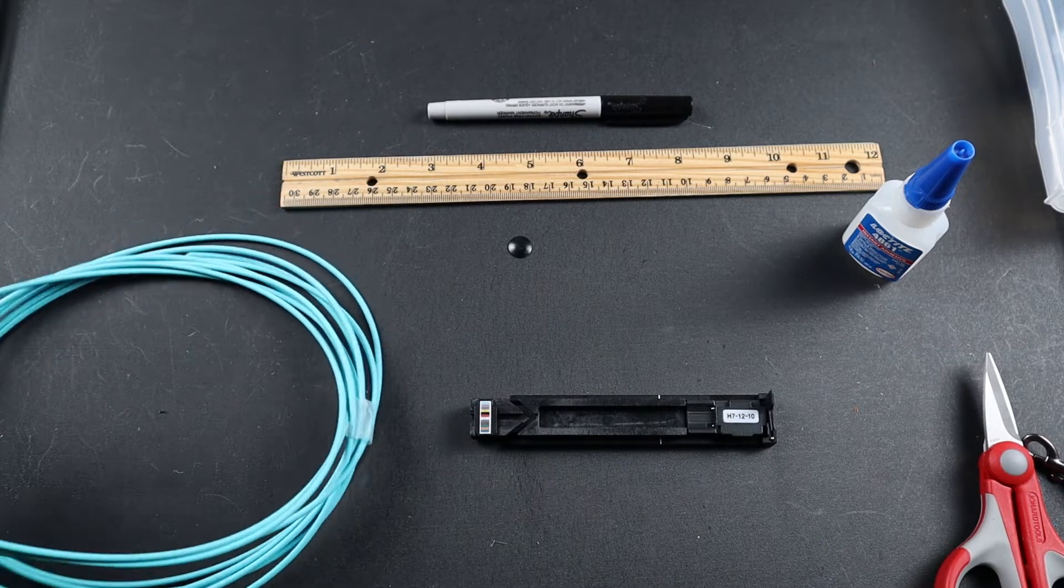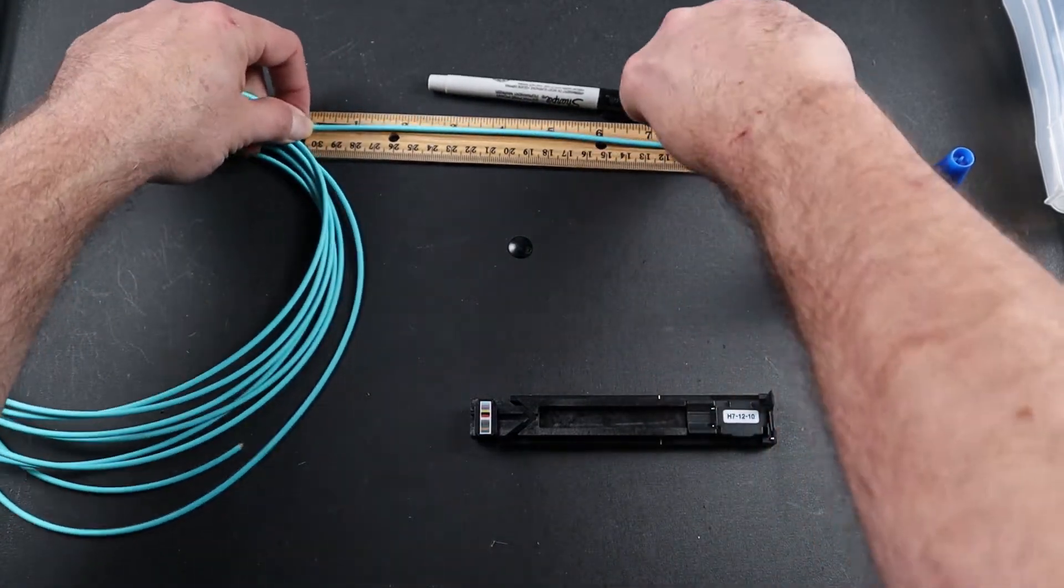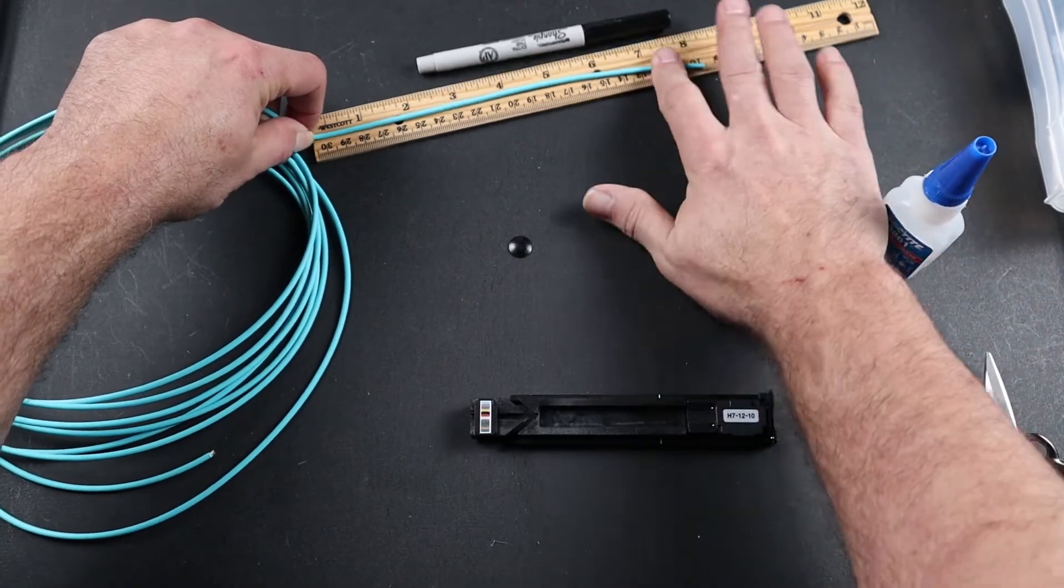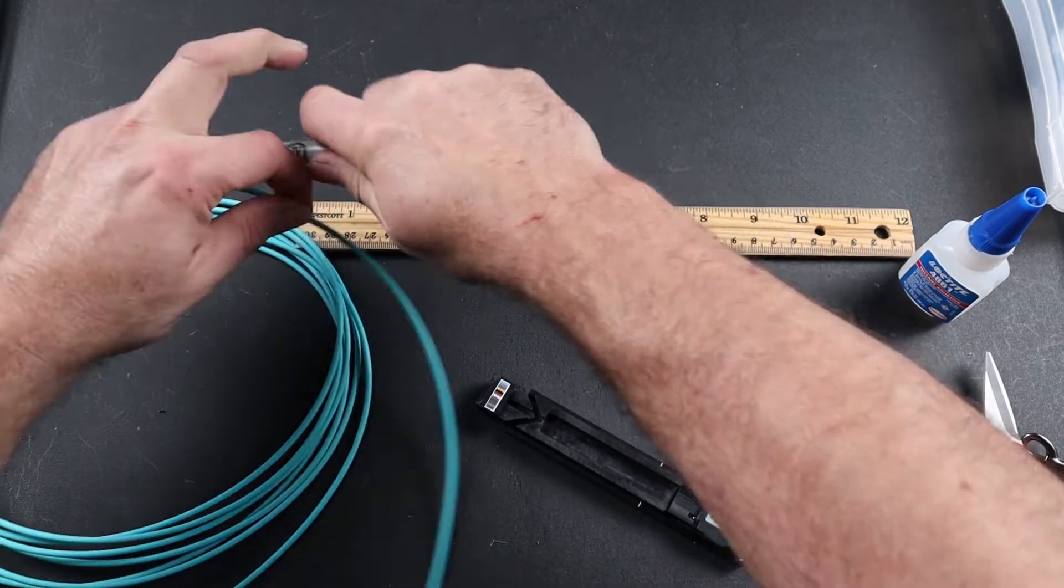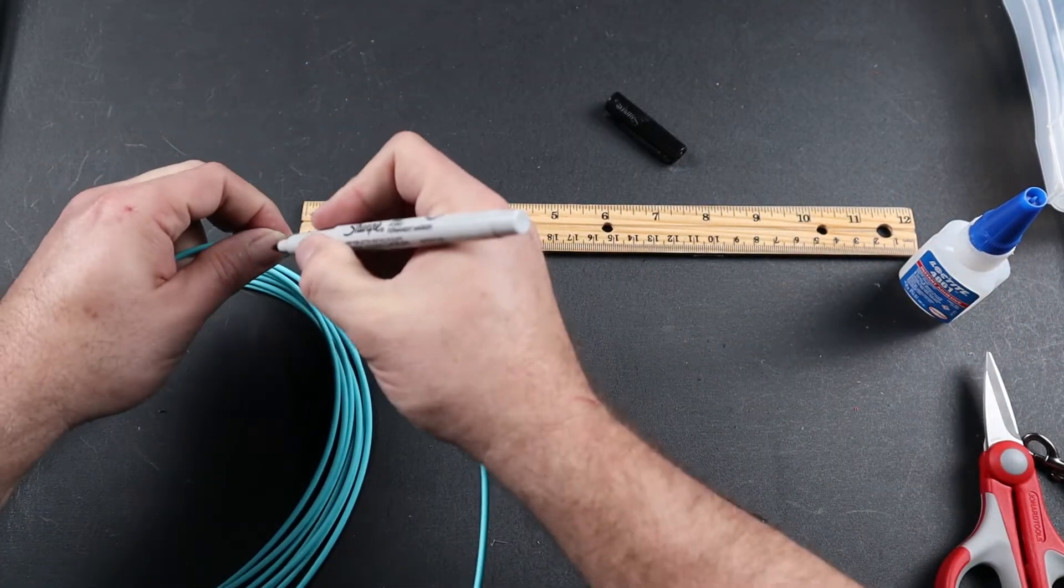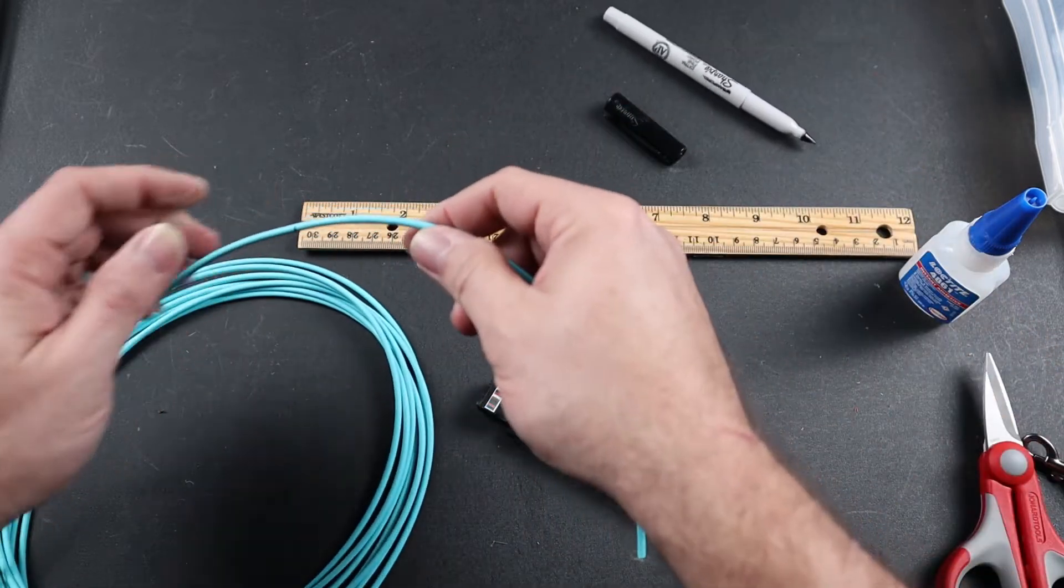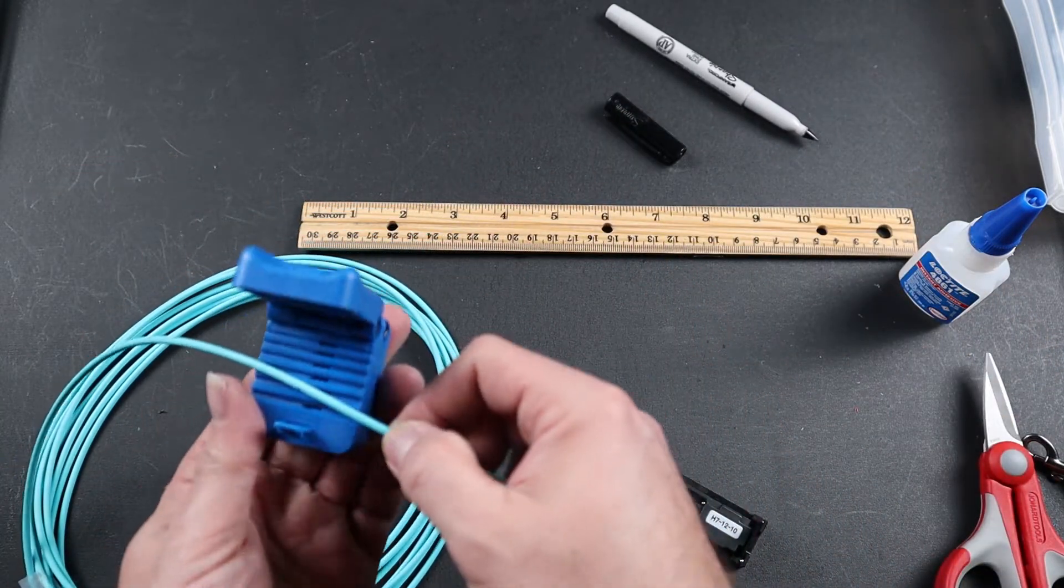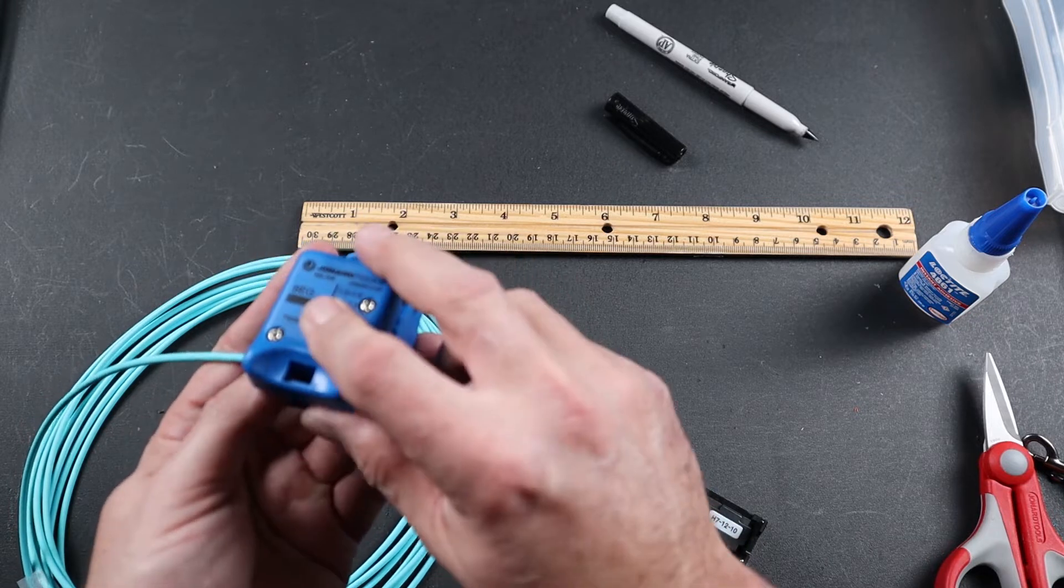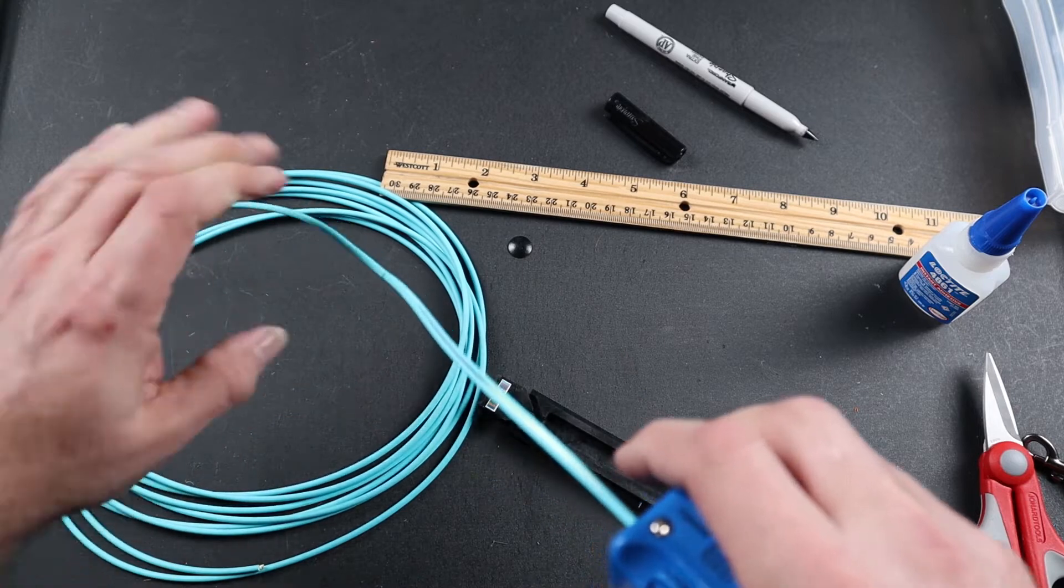Next, measure your fiber at eight and a quarter inches. Place your fiber in your fiber slitter and slit your cable.